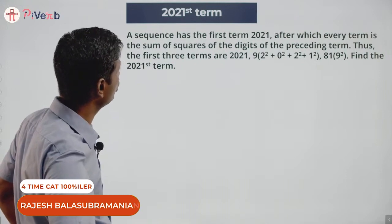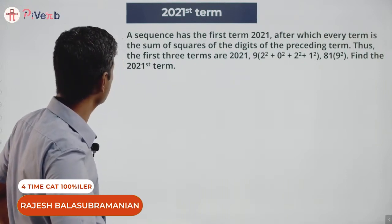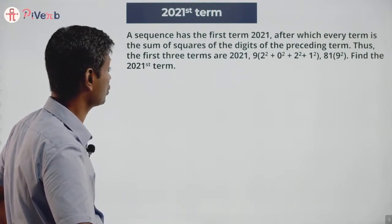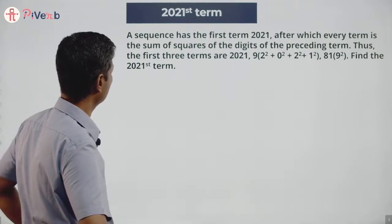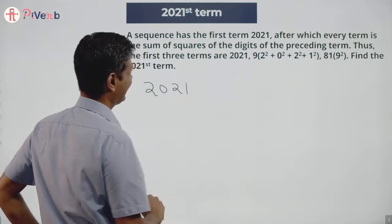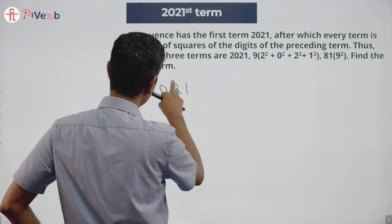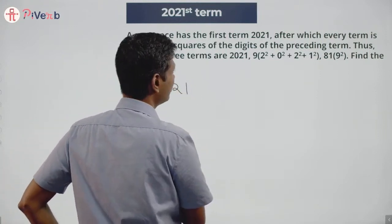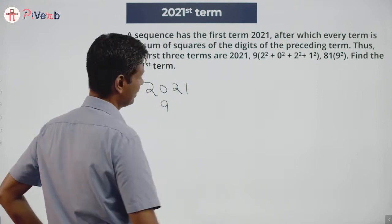A sequence has the first term 2021, after which each term is the sum of the squares of the digits of the preceding term. The first three terms are 2021, then 9 (2² + 0² + 2² + 1² = 4 + 4 + 1 = 9), and the next term...